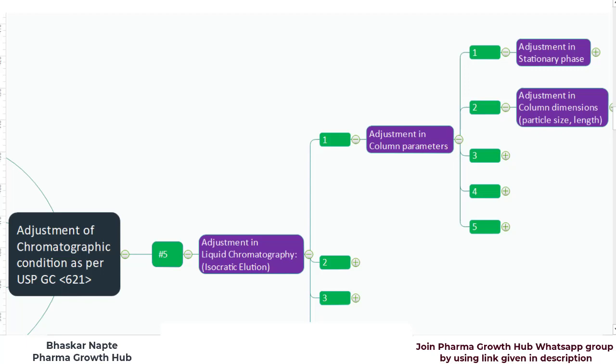Hello and welcome. My name is Bhaskar Naptay. I am the founder of Pharma Growth Hub, and in today's video we are going to discuss the adjustment in chromatographic conditions as per USP General Chapter 621.